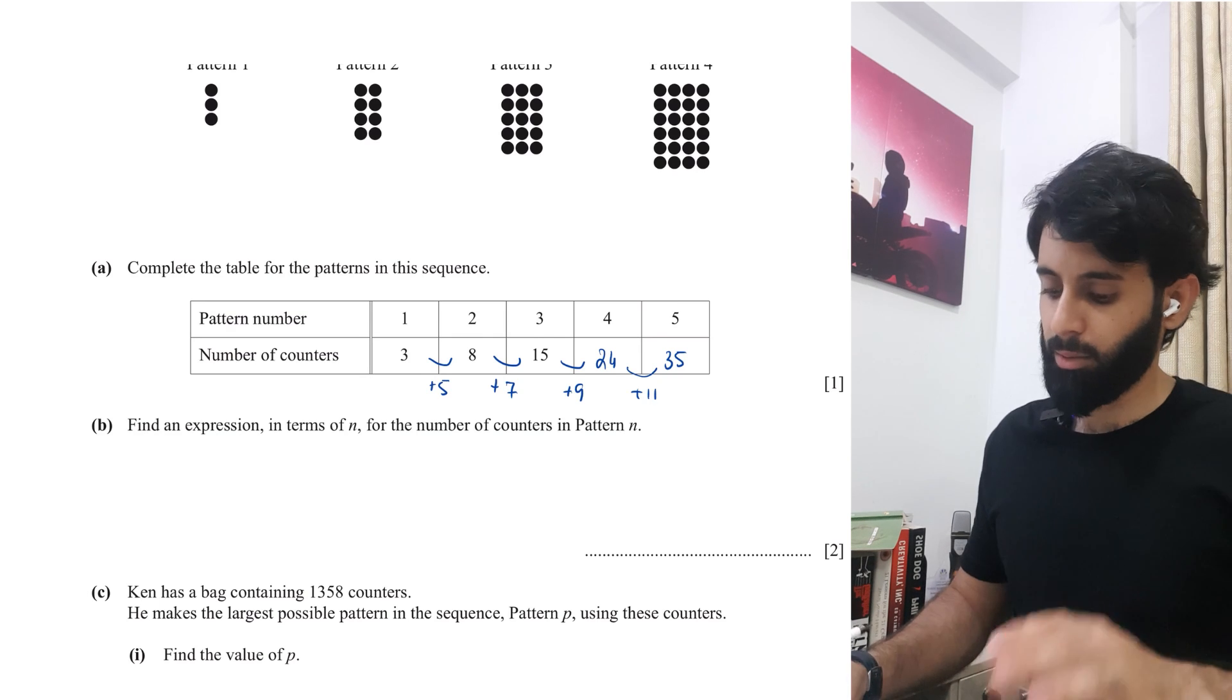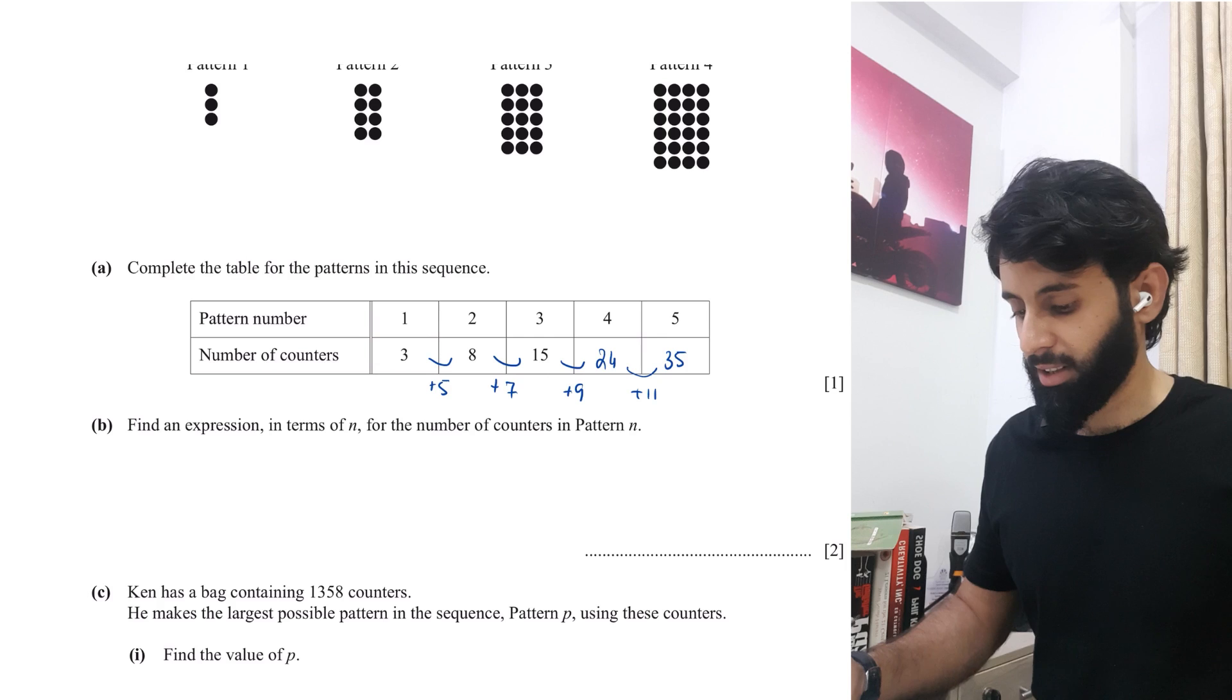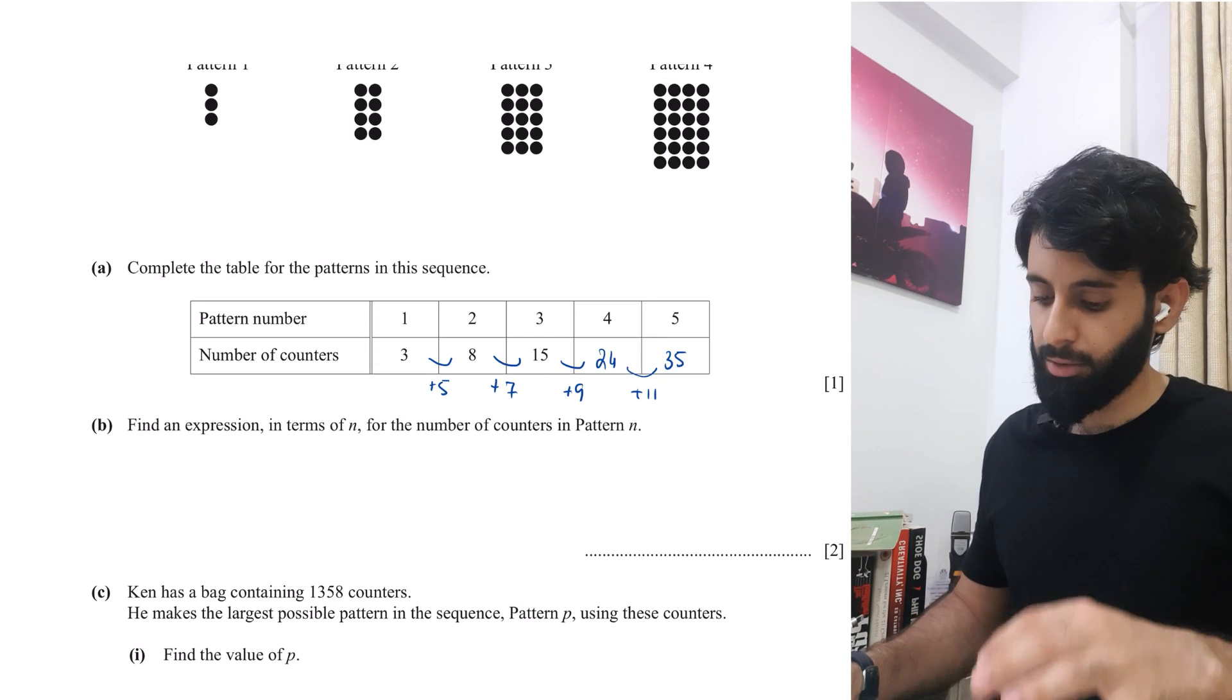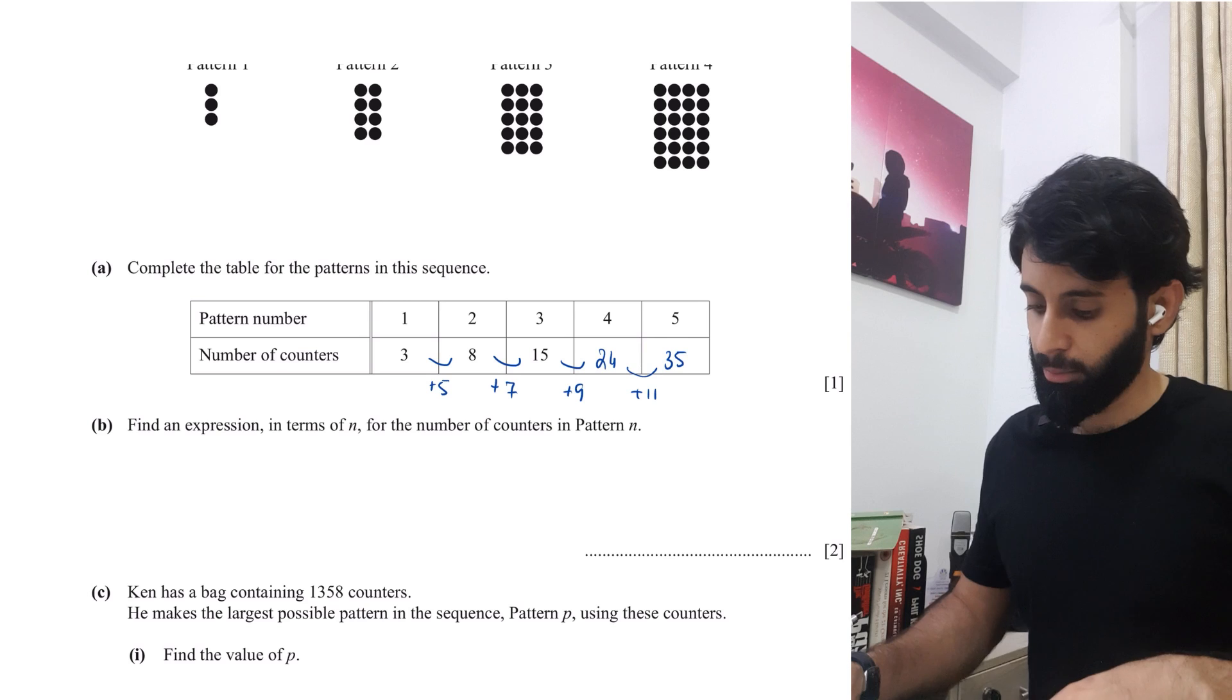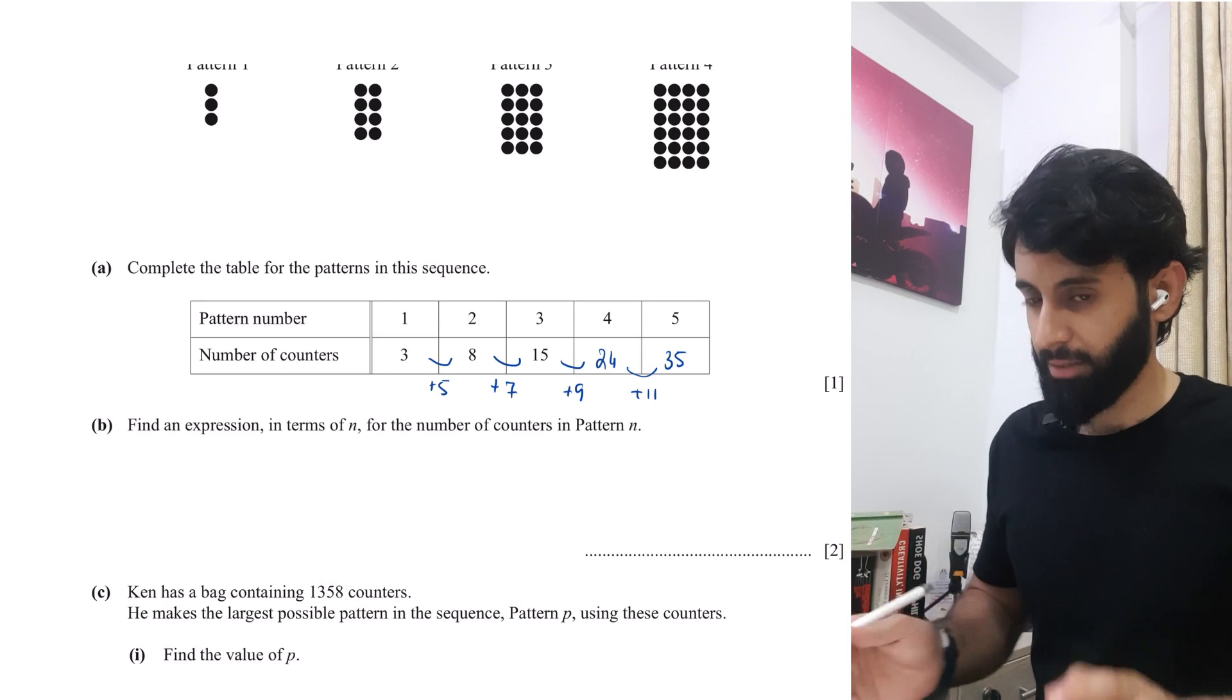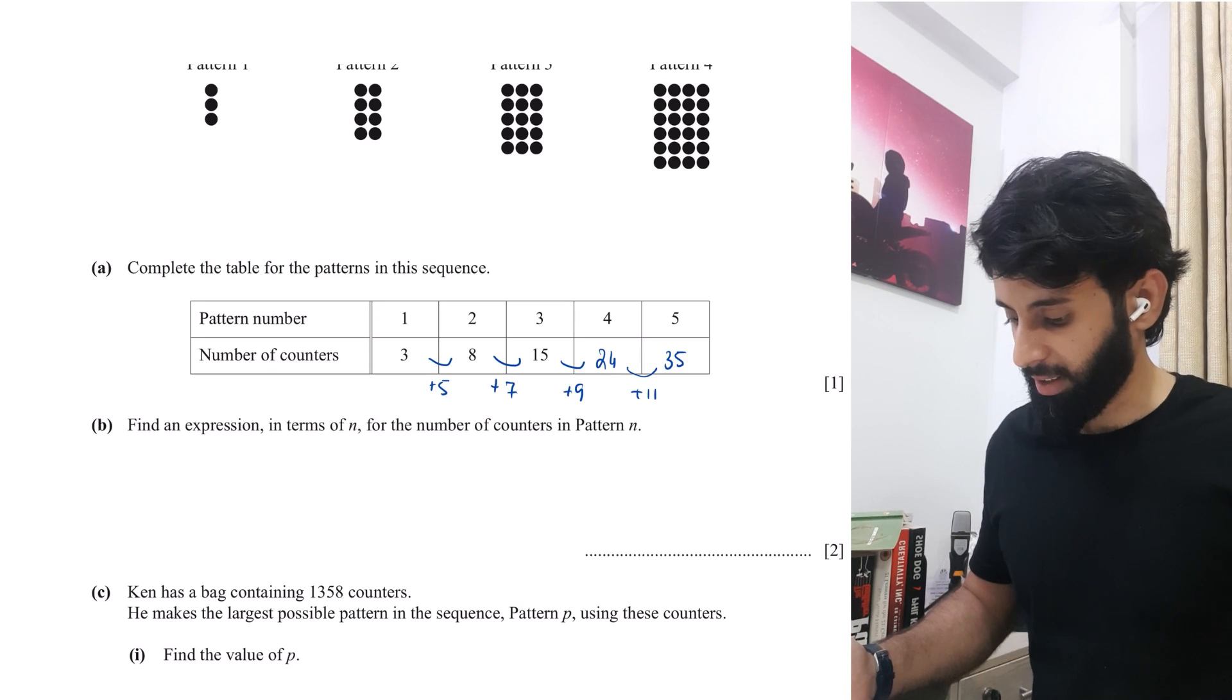Now in part B, what you have to do is you have to find an expression in terms of N for the number of counters in pattern N. So basically you have to find the general term. Now I have made a couple of videos on how to find the general term of a quadratic sequence since that's what it is. And I'll tell you why in a minute. And I'll hopefully attach the links of those videos in the description box if I haven't forgotten.